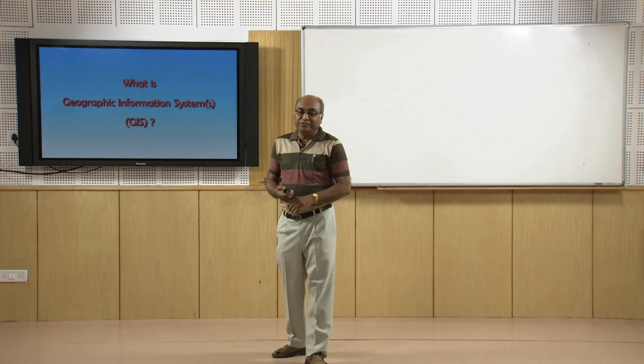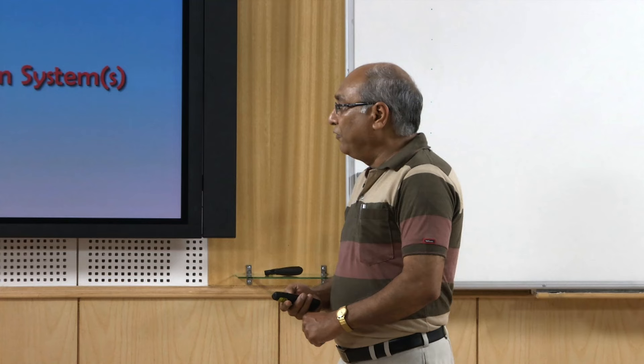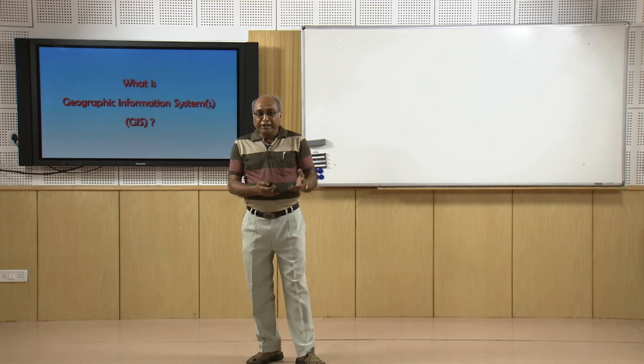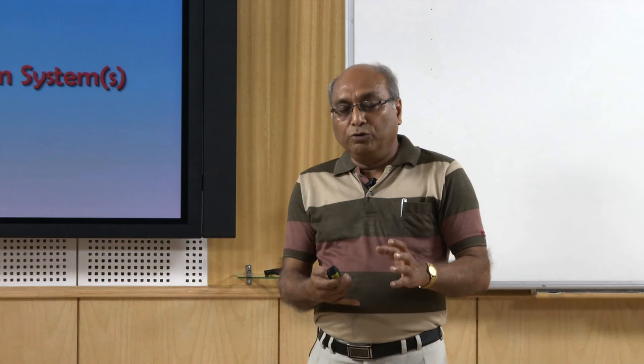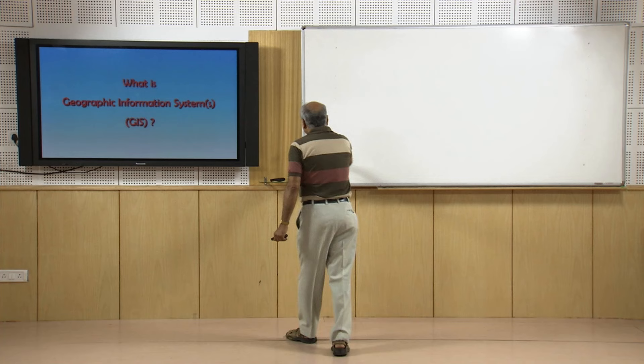The entire earth has an imaginary grid of latitude and longitude, and therefore each object on the surface of the earth can be assigned these coordinates. The advantage with the geographic system is that we can not only assign coordinates but handle very well all kinds of maps and data associated with geographic coordinates. Another term used for geographic is spatial.